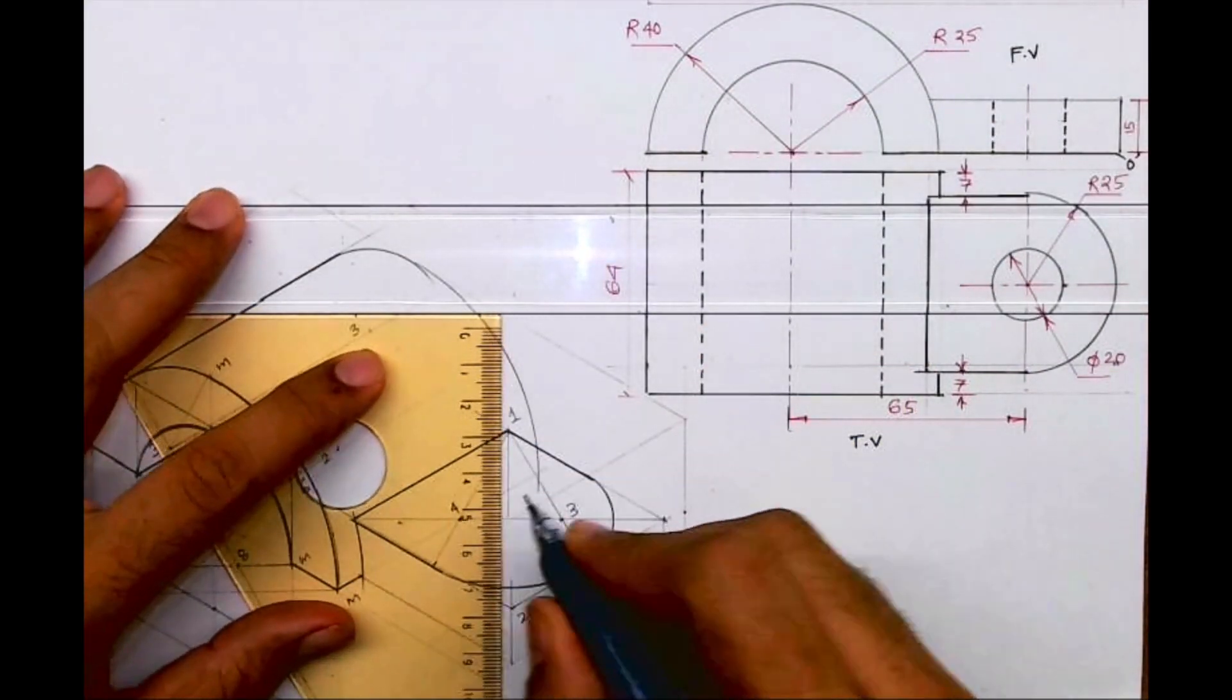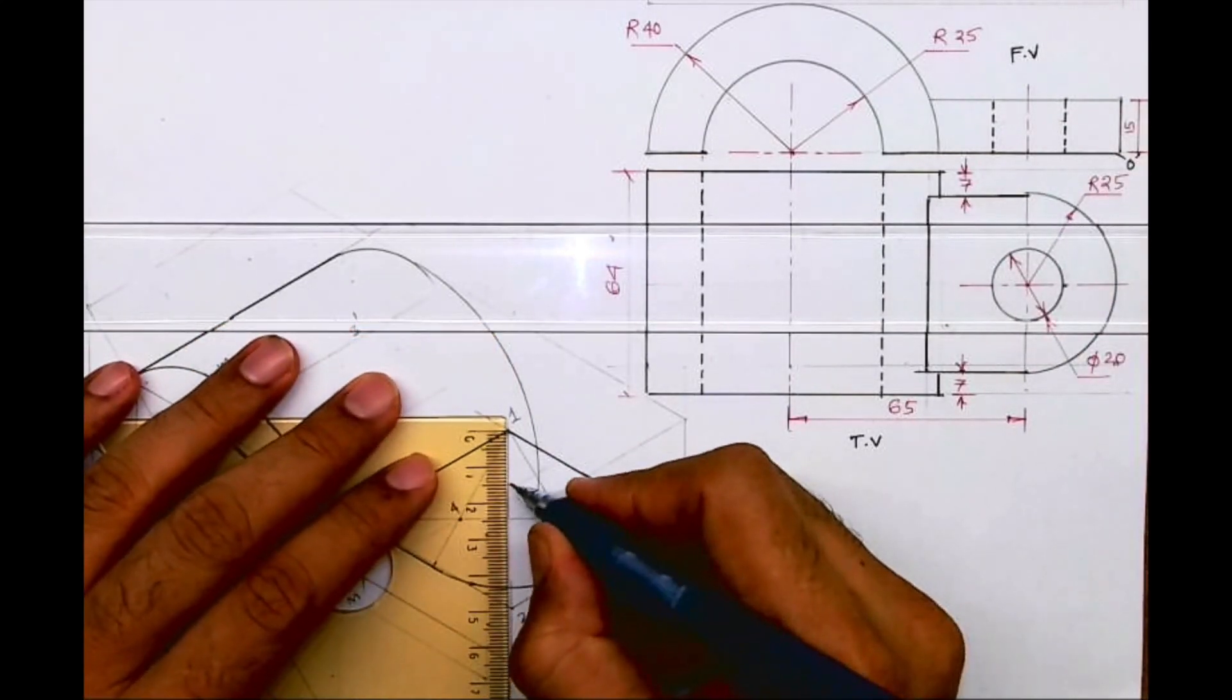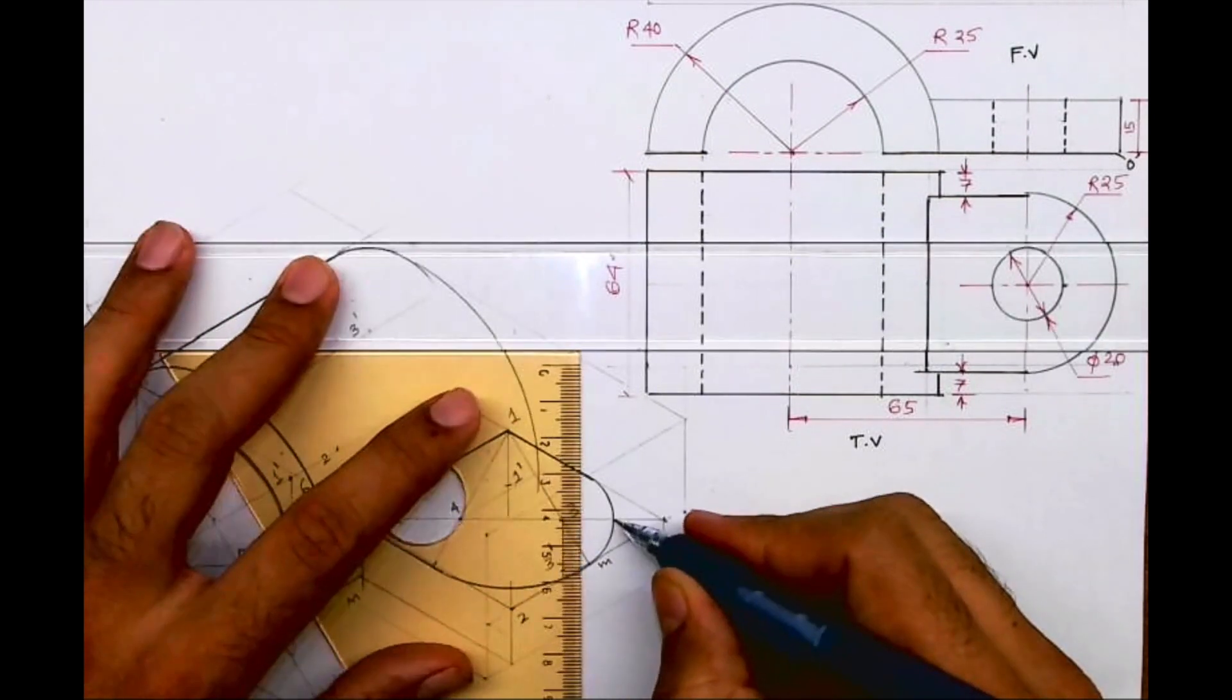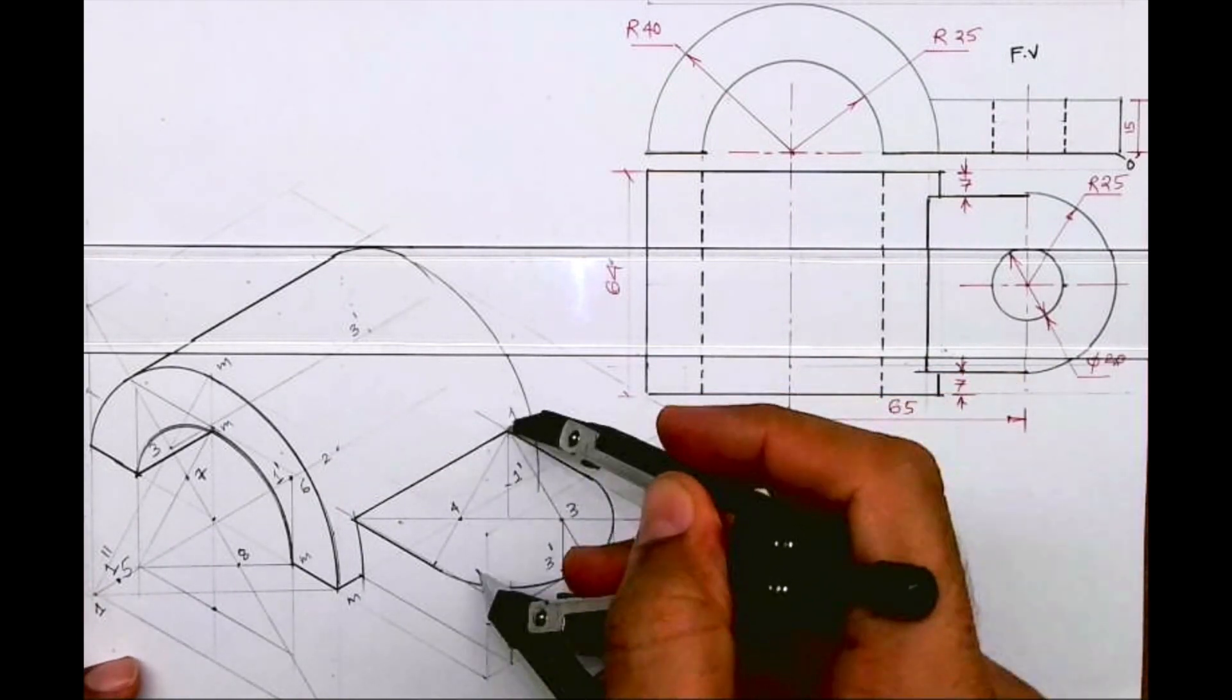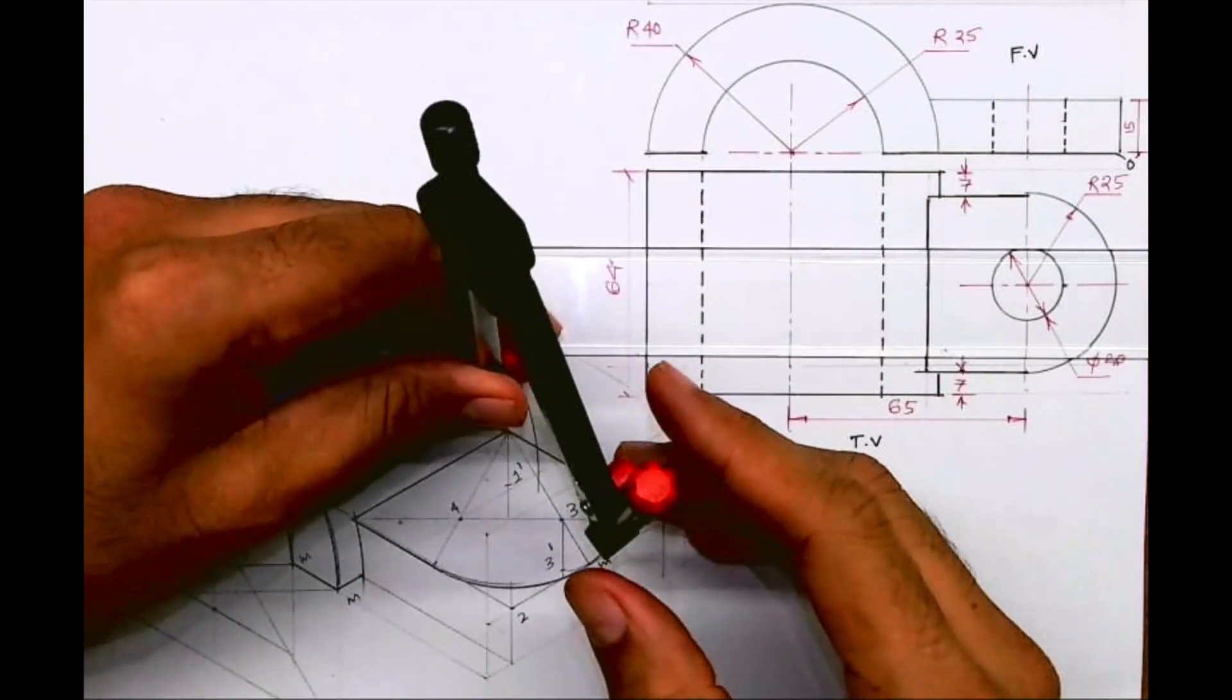Now the same semicircle we want down also. Height is 15. So I will take point one down by 15, one dash. Three down by 15, three dash. And I will draw tangent. So same method, you take one to M, go down by 15 on one dash, and from one dash you can draw arc.